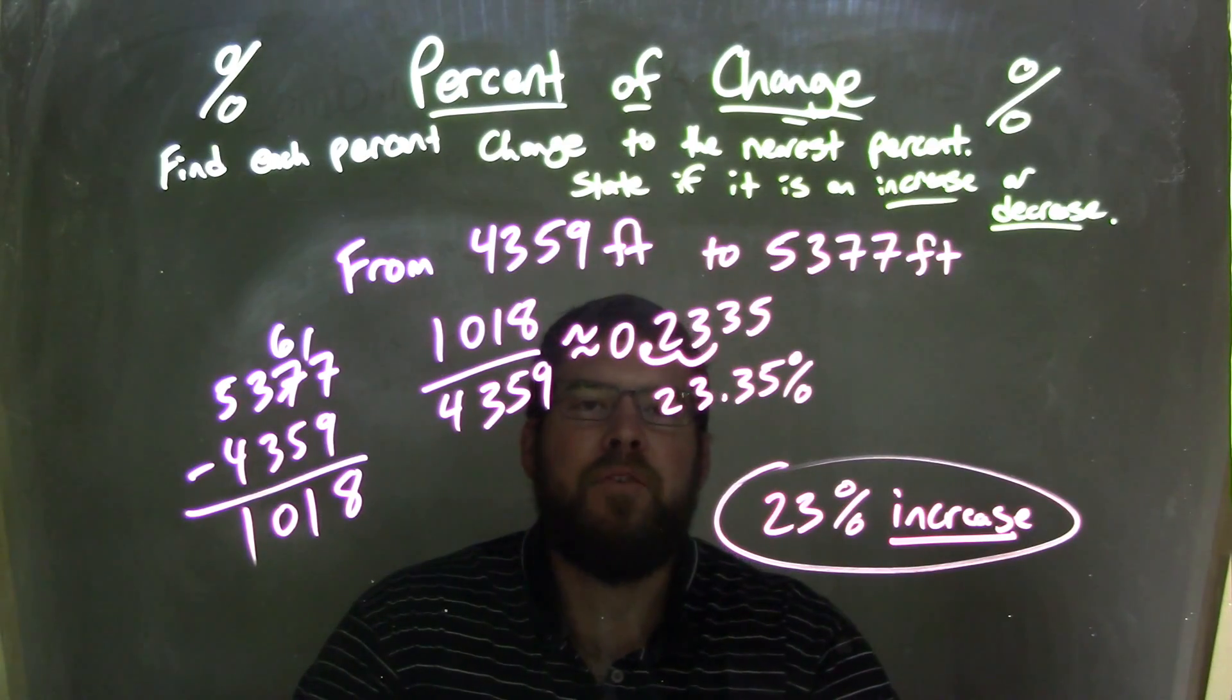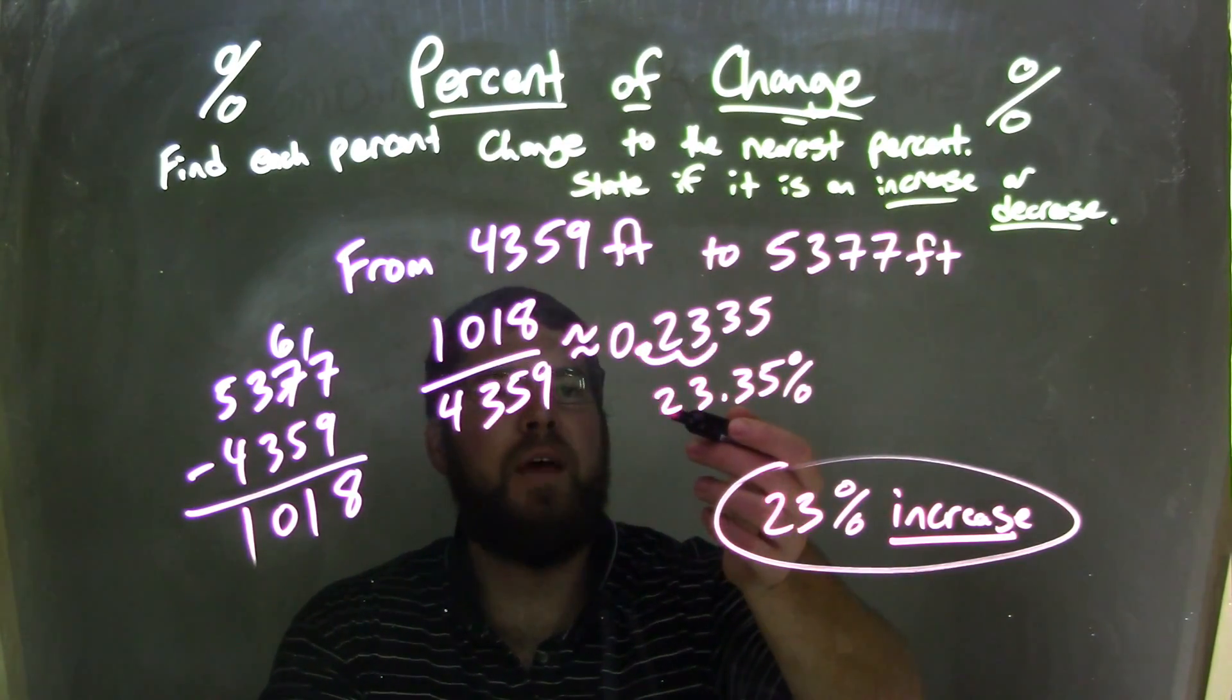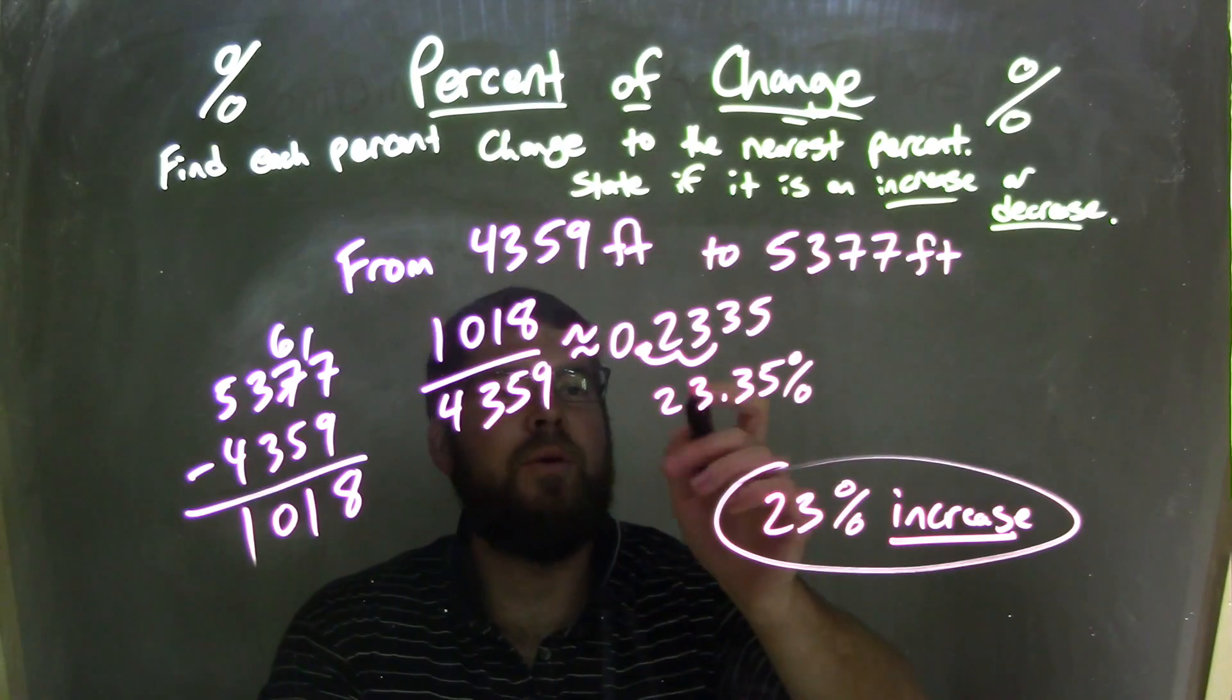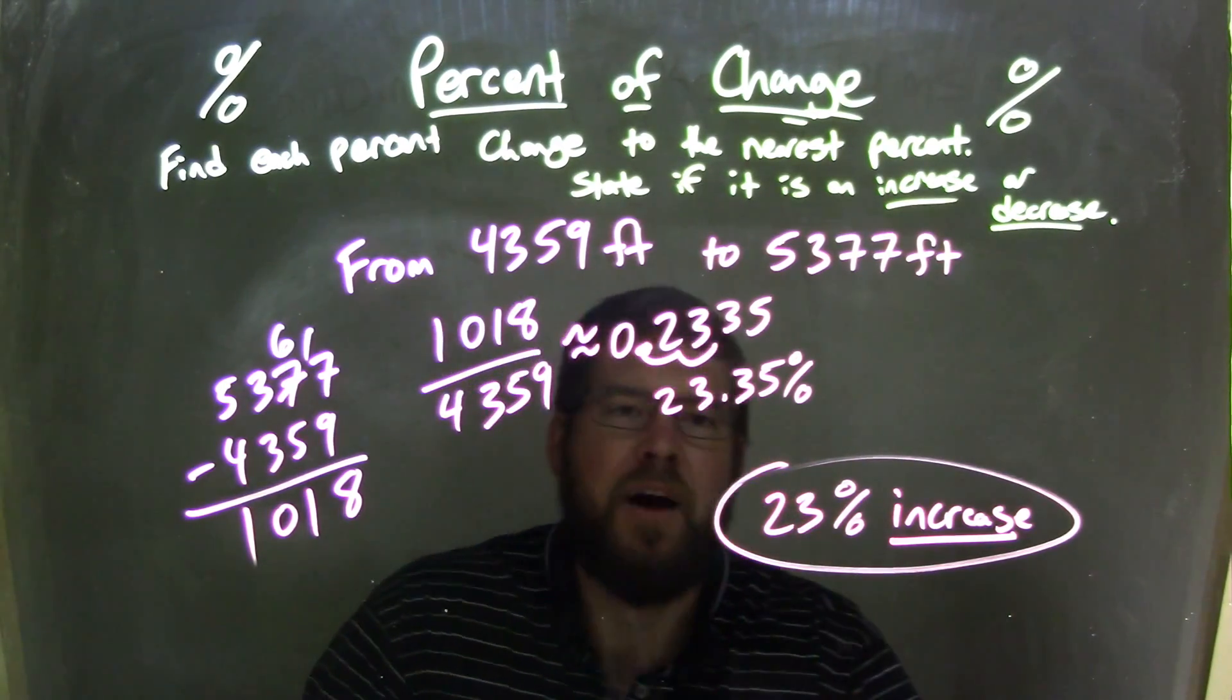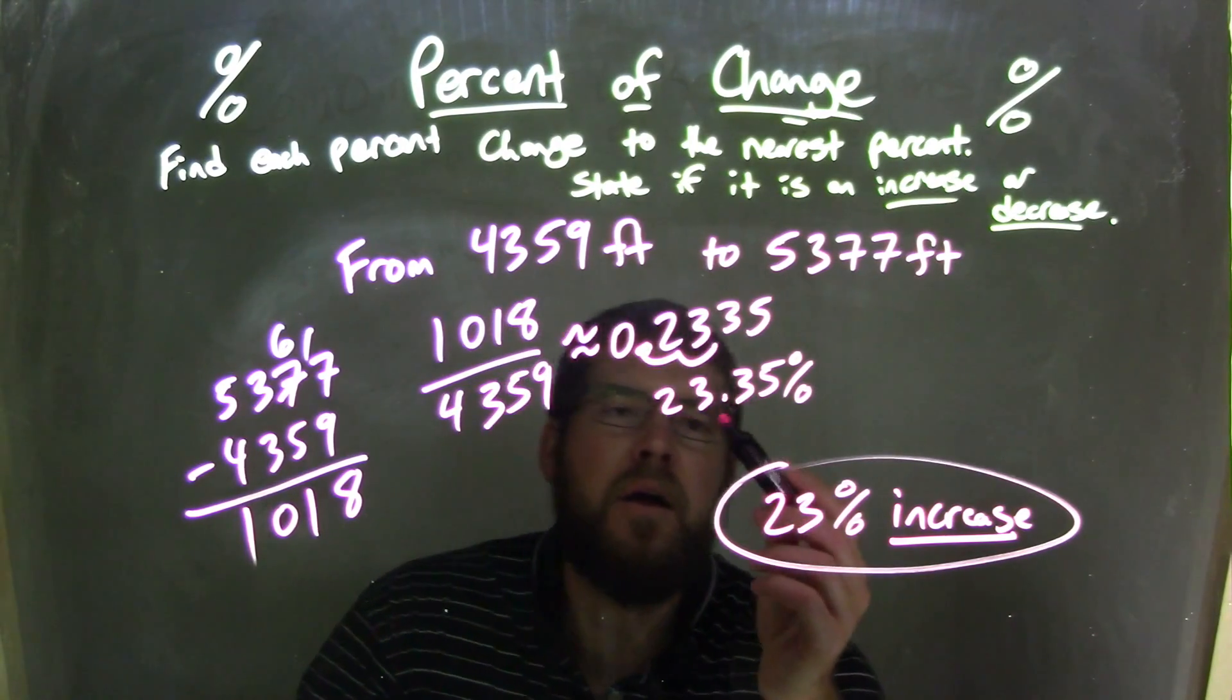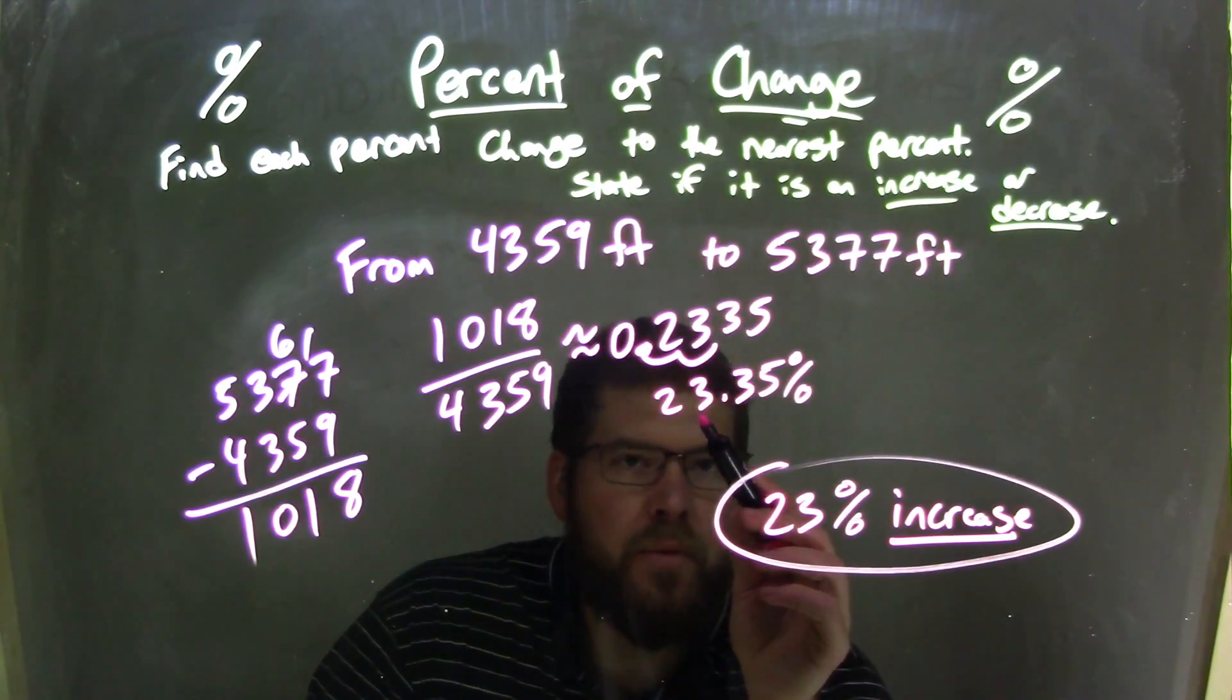That decimal came out to be approximately 0.2335. I take that 0.2335 and move the decimal over two units to convert it to be a percent, right? Convert, move over two decimals to convert that decimal to a percent. So we're left with a 23.35 percent. But I needed to round that, so I round to the nearest whole number. So this 3 here causes that 3 to round down to keep it a 3. So we're left with a final answer here of a 23 percent increase.